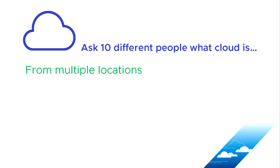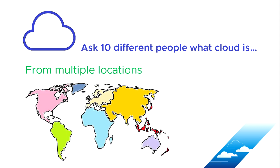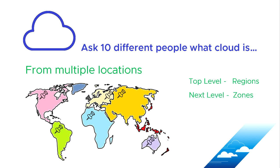The multiple locations aspect is interesting. Most cloud providers carve the world up into something called regions at the top level, which are carved up geographically. Inside those regions they use something called zones or availability zones, and a zone will usually have one or more data centers grouped together. These are scattered around the world, and when you set up cloud computing you'll pick which region and zone you want to consume that resource in.